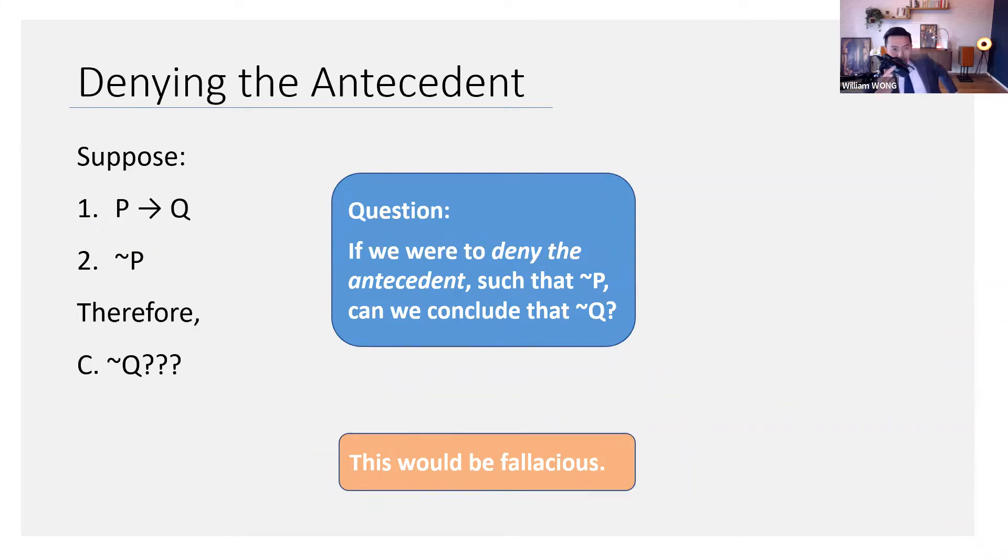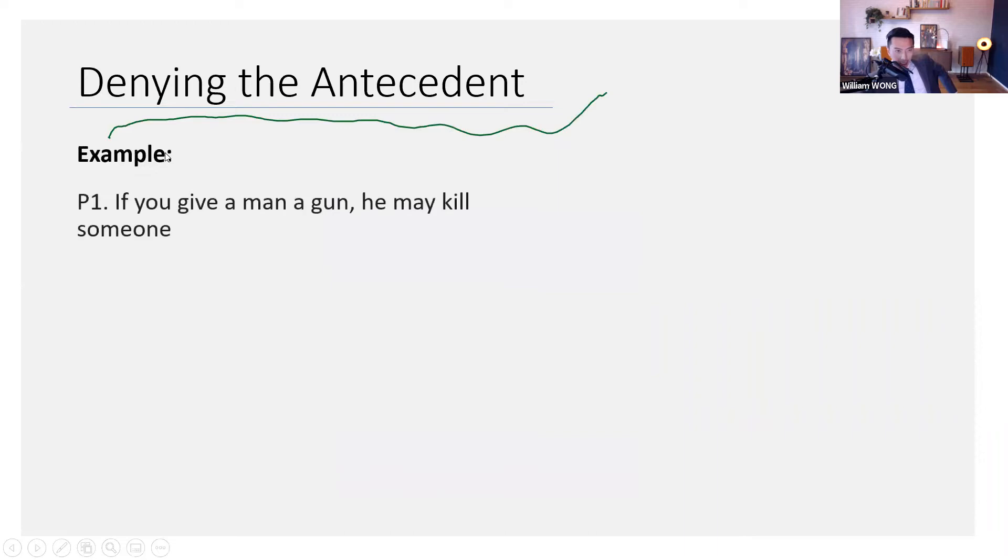So one way to remember this fallacy is to think about what denying the antecedent means. It's to assert not P, not the antecedent. And then it would be fallacious to conclude not the consequent. Here's an example.